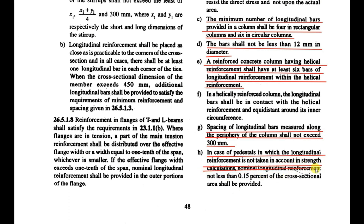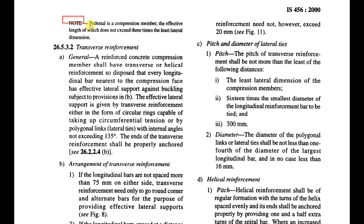In the case of a pedestal where longitudinal reinforcement is not taken into account in strength calculations, nominal reinforcement of not less than 0.1% of the cross-sectional area shall be provided. A pedestal is a compression member whose effective length does not exceed three times its least lateral dimension. A separate video explaining the difference between a pedestal and a column is available in the column playlist.